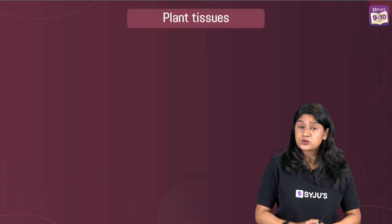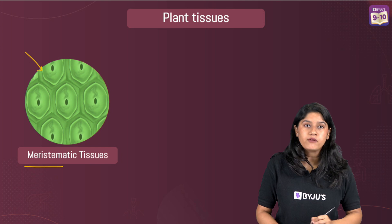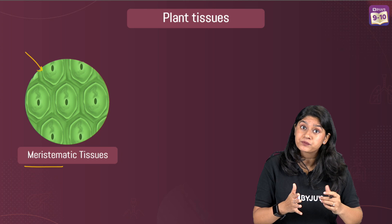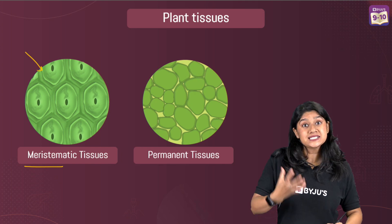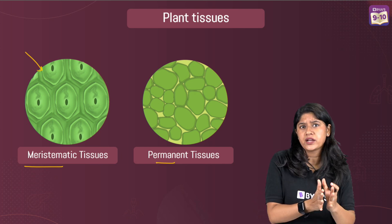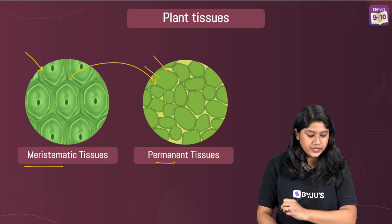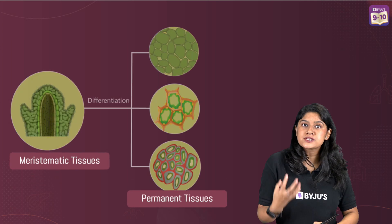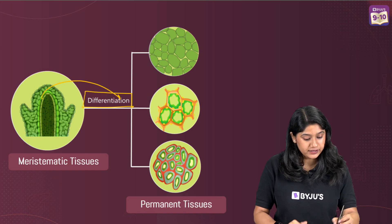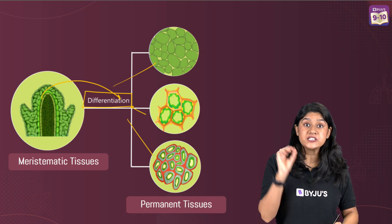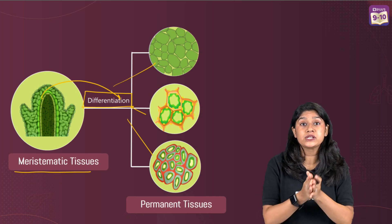Let's quickly discuss the different types of plant tissue. We have first the meristematic tissue, which is definitely living. These tissues have a special power of dividing continuously throughout their life. Apart from meristematic tissue, we have permanent tissue. As the name suggests, permanent means they will not be dividing after attaining a certain stage, and they will have a very specific function. The transition from meristematic to permanent tissue occurs by a process called differentiation, through which meristematic tissues divide into different types of other tissues with specific functions.